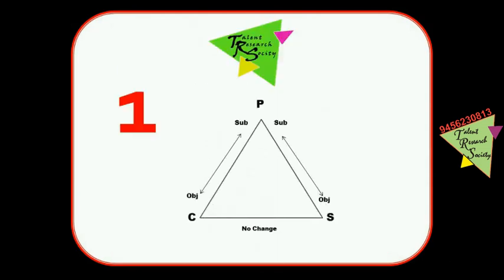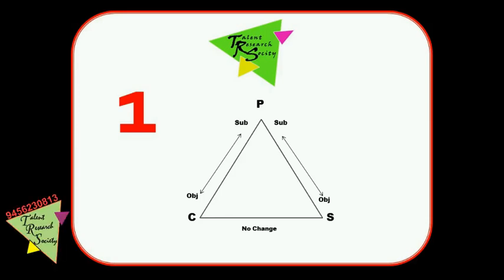To understand conversion between positive, comparative, and superlative, we divide it into three triangles. Triangle 1 has three corners: P for positive, C for comparative, S for superlative. Positive sentences are identified by 'as...as' or 'so...as.' Comparative sentences are identified by 'than.' Conversion can happen between any two forms.